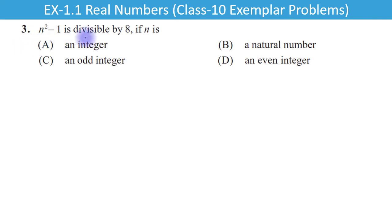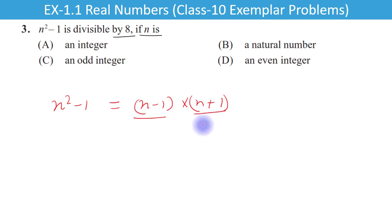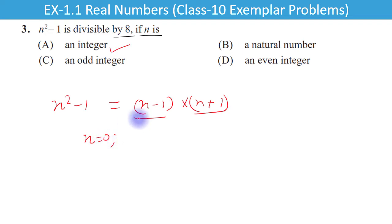Question 3 is a tricky question: n squared minus 1 is divisible by 8 if n is — we have to choose from the options. Yadi n squared minus 1 ko factor karen to aata hai (n minus 1)(n plus 1). In dono integers ka difference 2 ka hai, yani ye alternate numbers hain. Testing n equal to 0: product aata hai negative one — pehla answer galat hai.